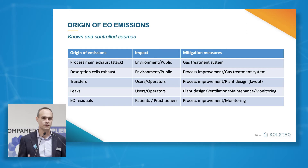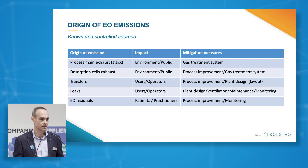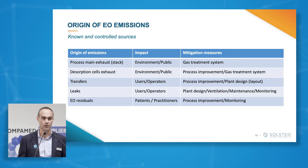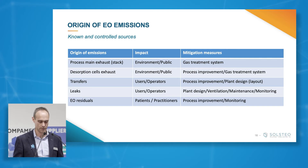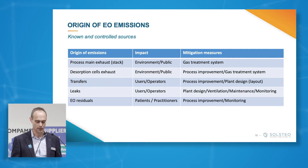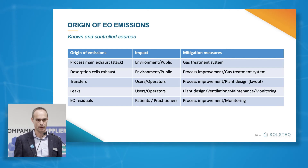Then we have the transfers of pallets between the sterilizer and the aeration cell, which can also release EO into the atmosphere. These have mainly an impact on the operators who may have to move the pallets between the cells, and can be improved by process improvements and plant design. And then we have other sources like leaks — which happen not on a normal basis but mainly in case of failure — also impacting operators and improved by plant design, ventilation, maintenance, and monitoring.